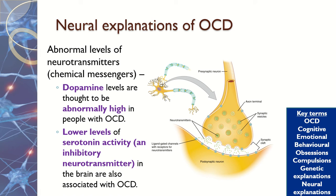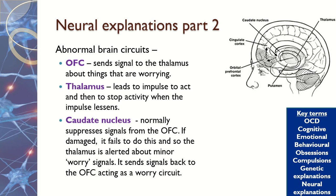Thinking now about how that affects or is affected by your brain — there are different parts of your brain responsible for different things, and particular structures are really important in the development of OCD. The first is the orbital frontal cortex, or OFC, which signals that you are worrying about something. In OCD, you might be worrying that a family member is going to die if you don't perform a certain behaviour.